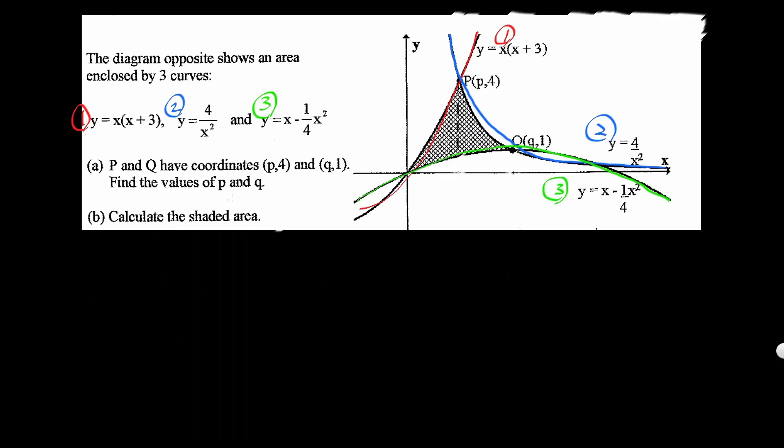So we're supposed to find p and q coordinates. They give you y values already, which makes it easier. They say p is something p, 4, and then q is q, 1. Let's figure out what p and q are. Point p is an intersection of the graphs number one and number two. If you use number two equation, y is equal to 4 over x squared, I could figure out what x is because they gave us what y is. y is 4, so if I use that, x should equal to plus or minus 1, but it's on the right side, so x must be 1. That means p is 1. So we have p equal to 1, so that is 1, 4 now.